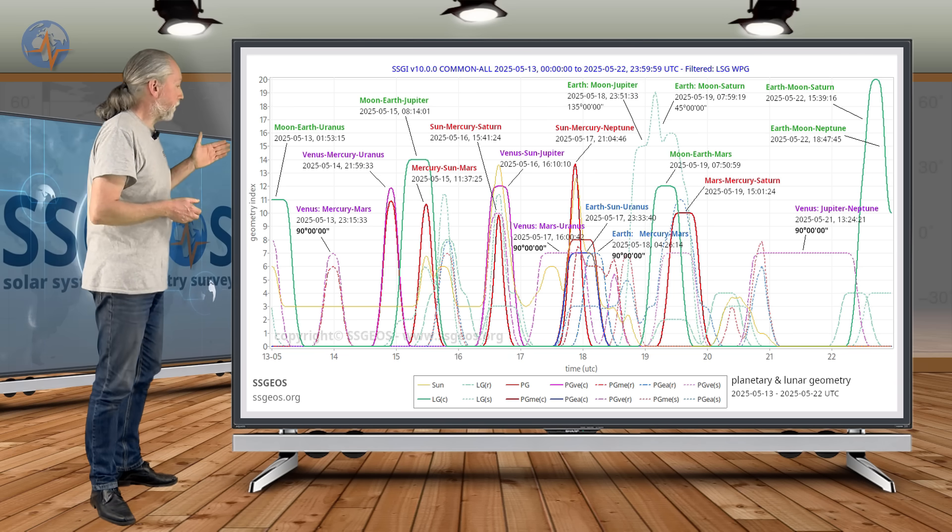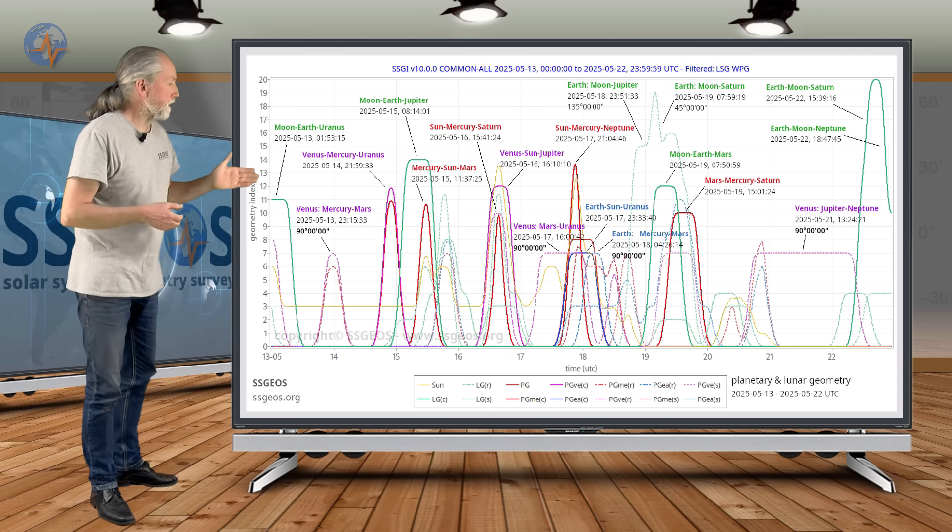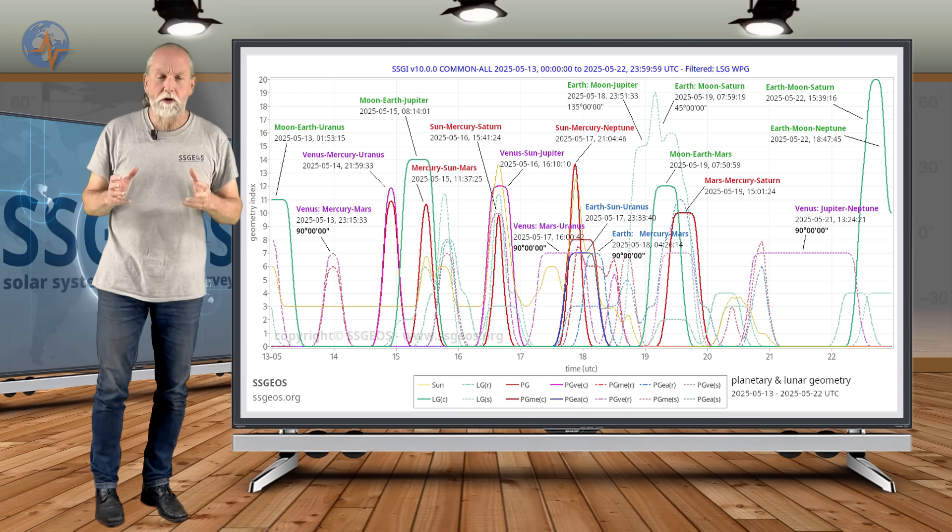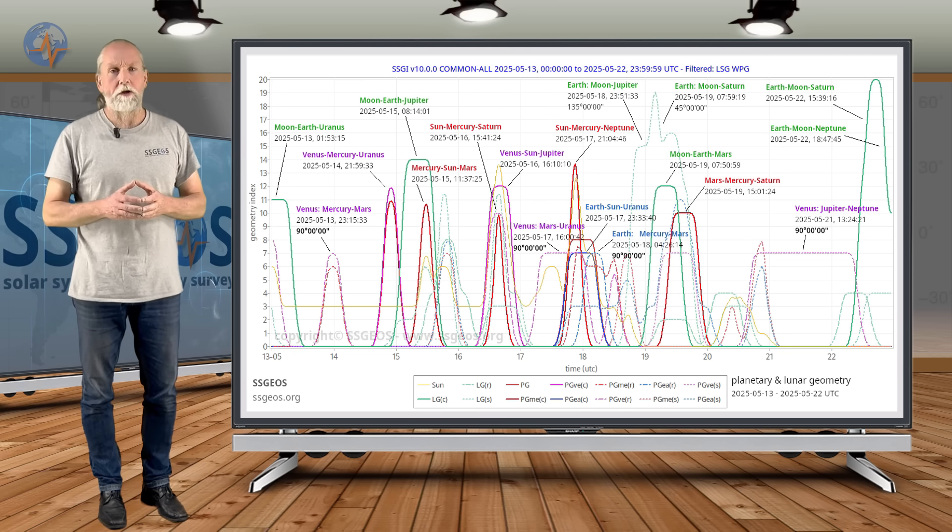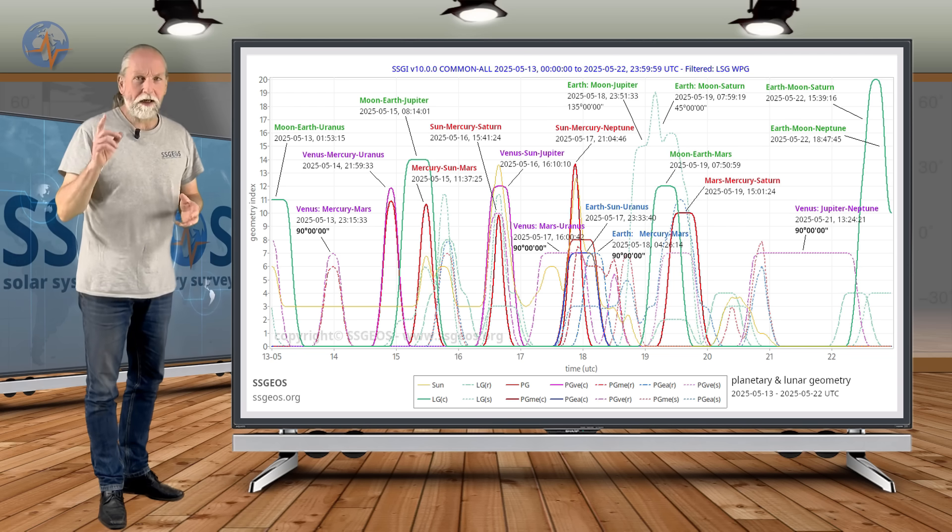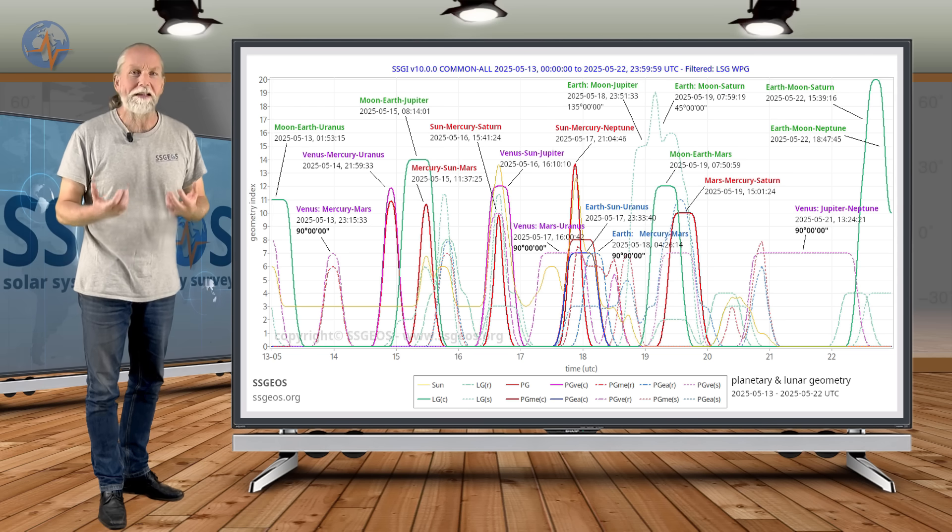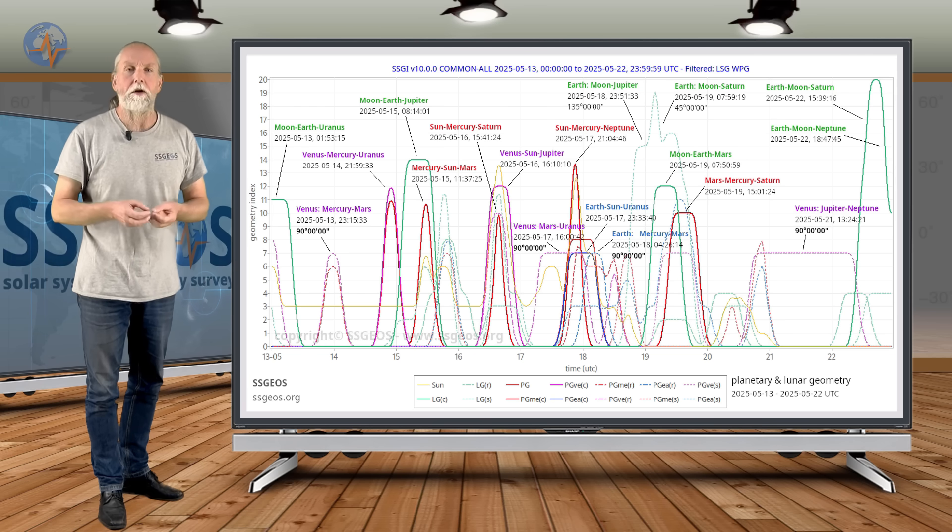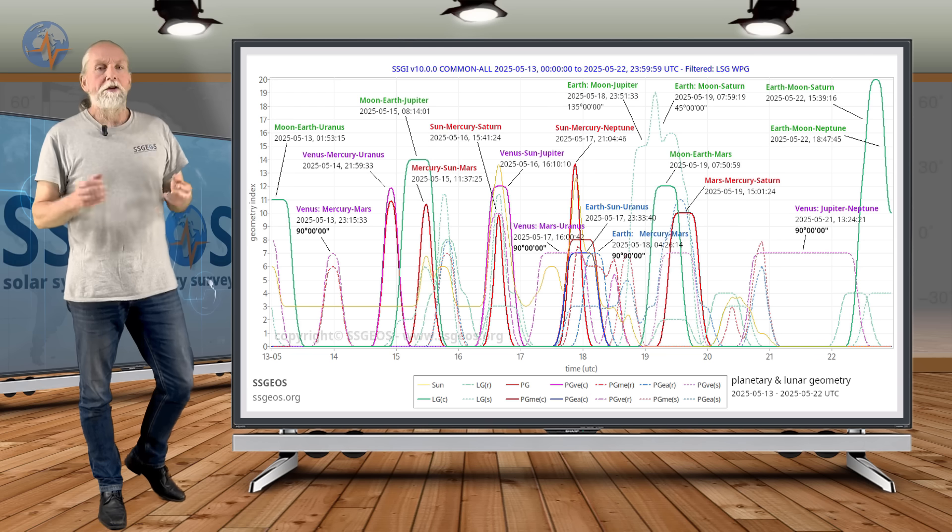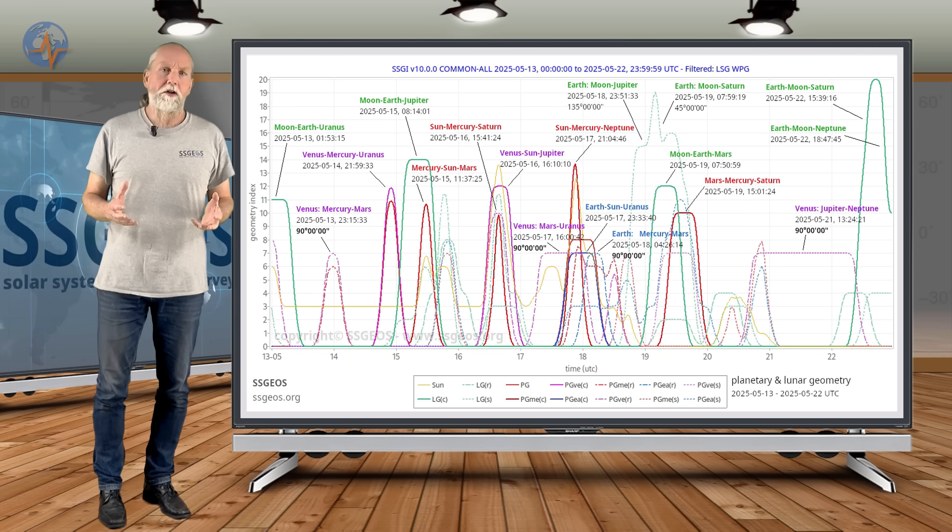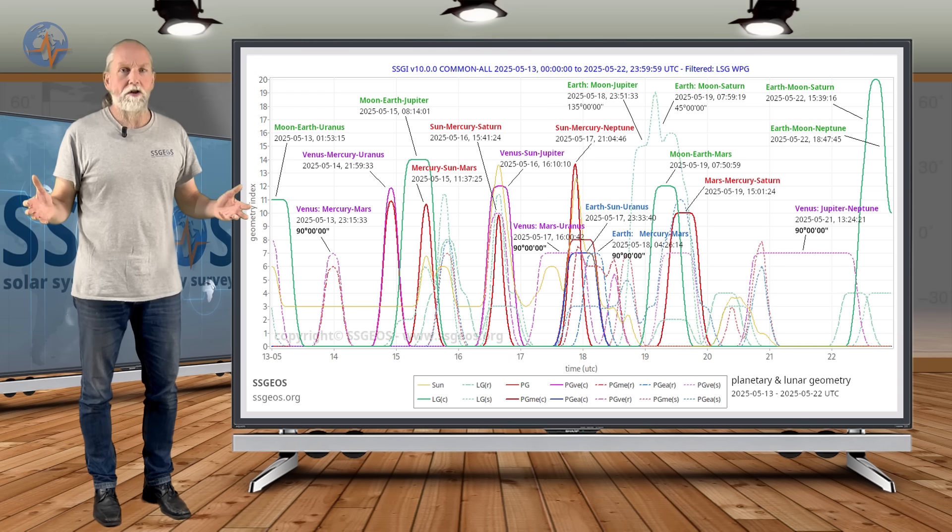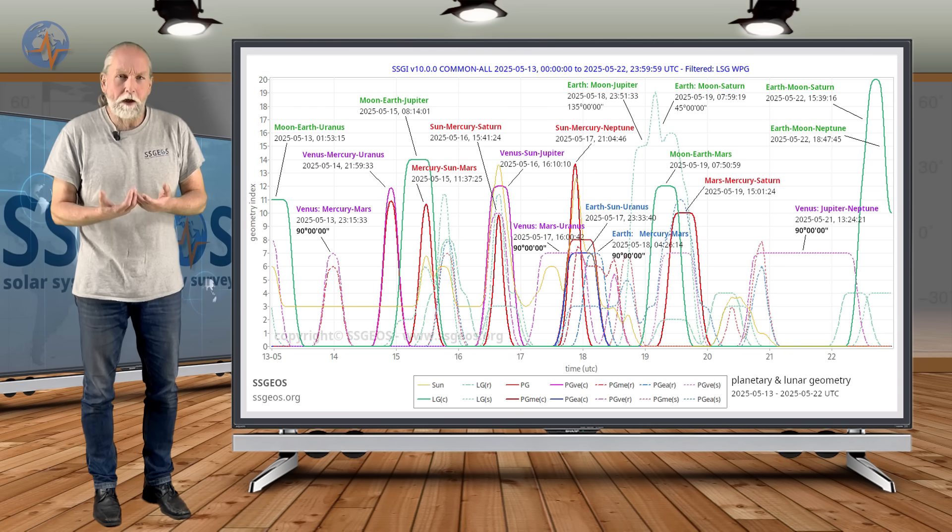So all in all, from the 15th approximately to the 19th, we have a sequence of really critical, exceptional planetary geometry. There can be really large seismic activity as a result. In a worst-case scenario, it could go well over eight magnitude. The actual seismic response depends on the stress levels in Earth's crust.